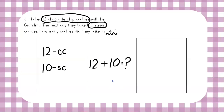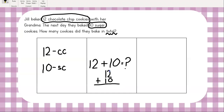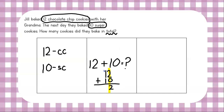Let's solve this one with the place value strategy. We're going to stack 12 plus 10. We're going to add our ones place first: two plus zero gives me two. Then we add our tens place: one plus one gives me two. But wait — we're not done yet. Let's label our answer: 22 cookies. How many cookies did Jill bake with her grandma? 22 in total.